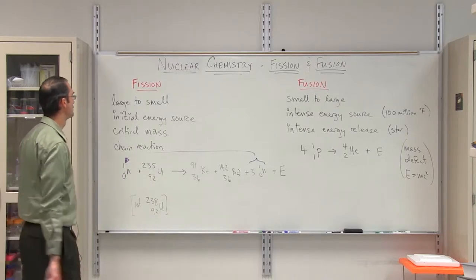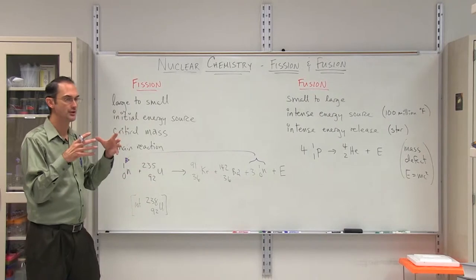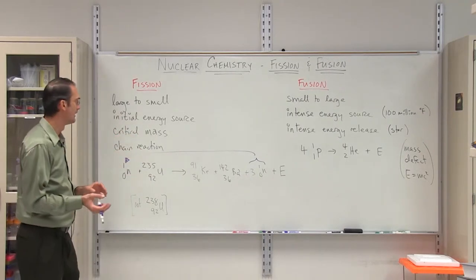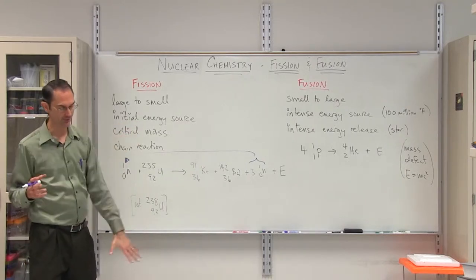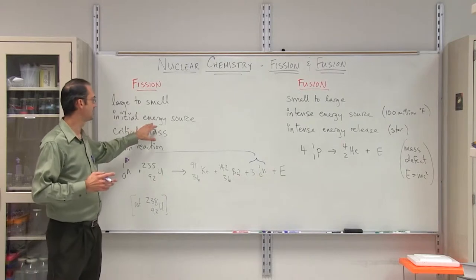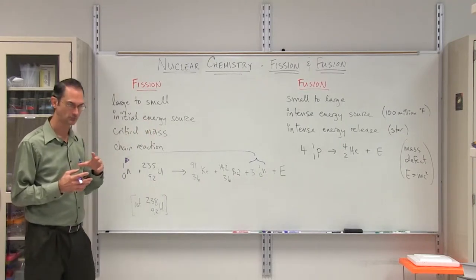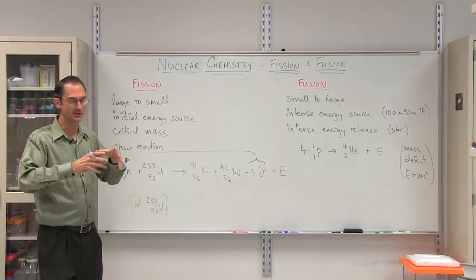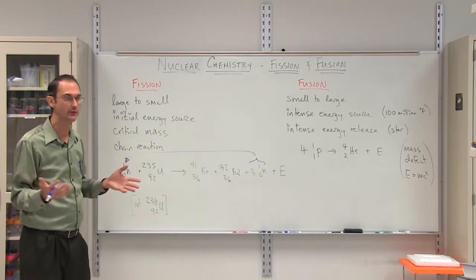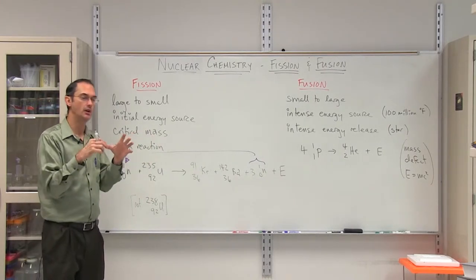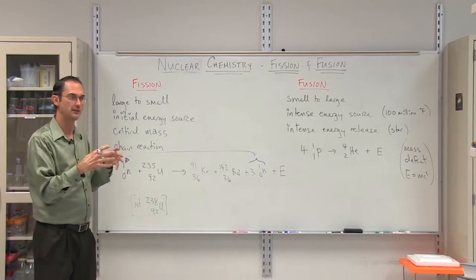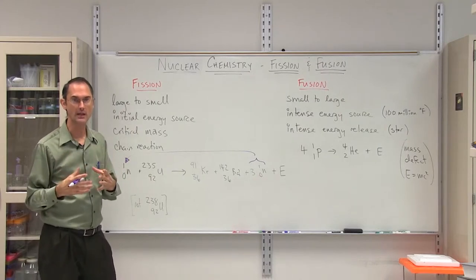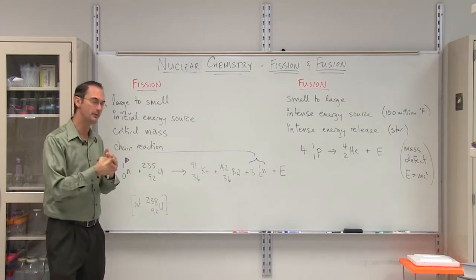First of all, for fission, what happens is a large nucleus is broken down into two smaller nuclei, and normally it's a very large nucleus, something that comes from the bottom half of the periodic table. You need an initial energy source to get this to happen through a bombardment reaction. Otherwise this nucleus will be rather stable, but fission is normally when you hit that nucleus with some energy and then it will decay. That amount of energy can be a simple explosion with TNT or a normal type of explosive, or it can be a bombardment reaction.